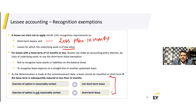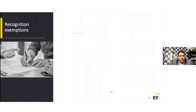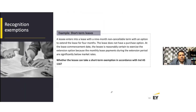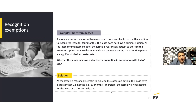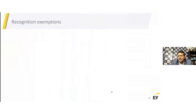If there are 11-month leases with renewal options that are likely to be exercised, they are not short-term leases. Example: a lessee enters into a lease with a nine-month non-cancellable term with an option to extend for four months. At lease commencement, the lessee is reasonably certain to exercise the extension because the monthly payments during the extension period are significantly below market. The lease term is therefore 13 months — greater than 12 months — so the lessee cannot account for it as a short-term lease.